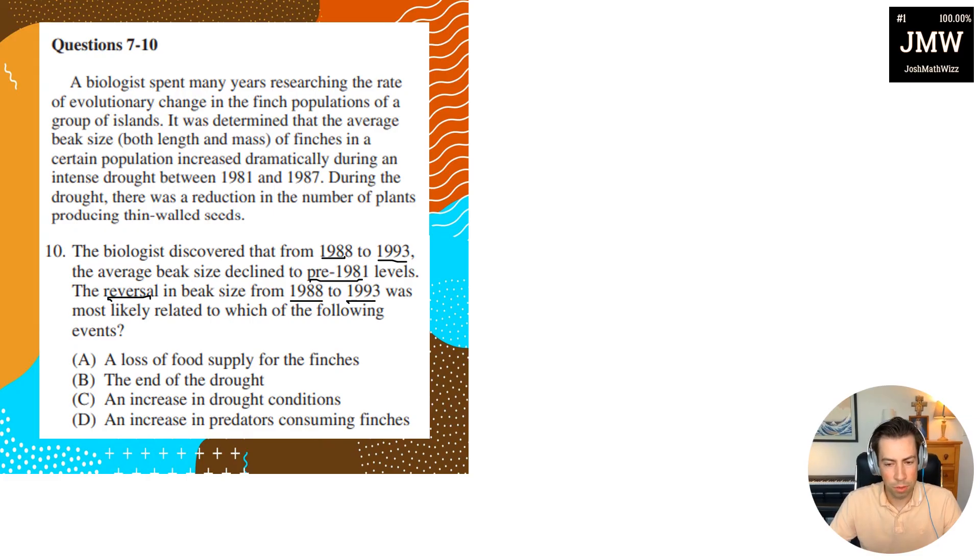A: Loss of food supply for the finches, well then they would all just die, right? B: The end of the drought. C: An increase in drought conditions, well remember the drought conditions are what caused the beaks to get larger, so that doesn't make sense. D: An increase in predators consuming finches, well then again their population would decrease. So therefore the correct answer is B. All right guys, sorry about that, dog's barking in the background for the last minute or so, but anyway, correct answer is B. If you guys have any questions for me, comment below and I'll see you guys in the next video.